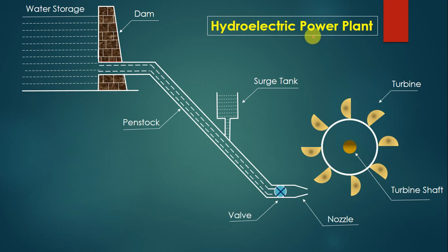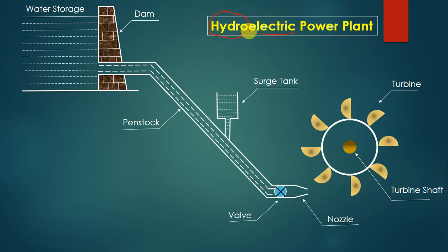Basically, power plants are used for generation of electricity, so the main objective of this arrangement is to generate electricity. The name 'hydroelectric' is formed by two words: 'hydro' and 'electric'. The word hydro is taken from hydraulic, and electric is taken from electrical energy. So in this power plant, hydraulic energy is converted into electrical energy. Hydraulic energy is the energy which is stored in the water.